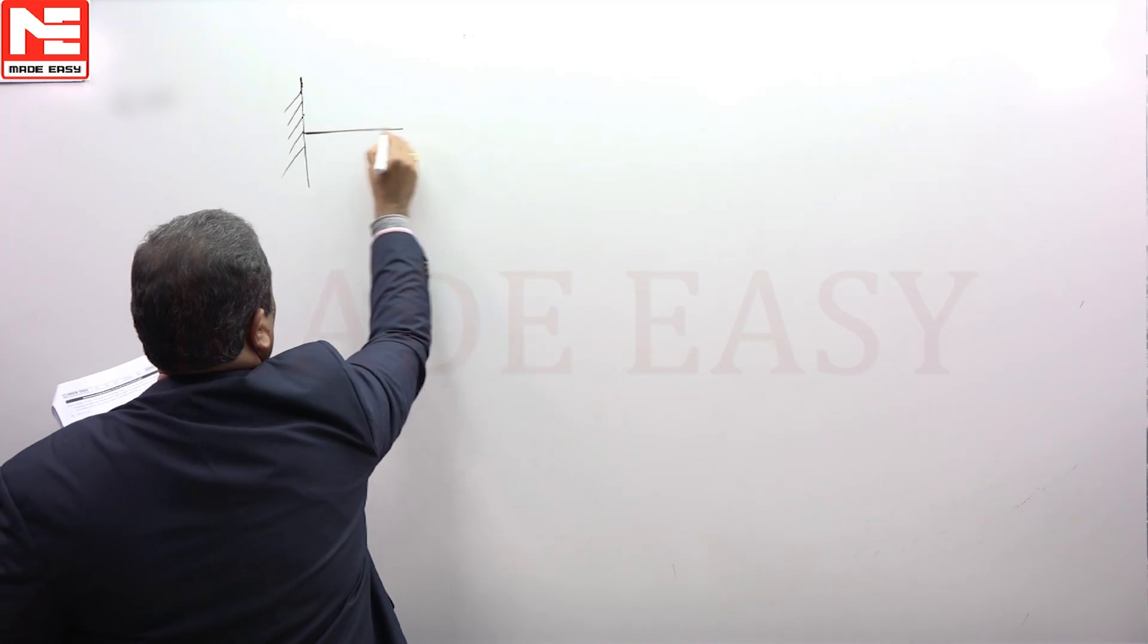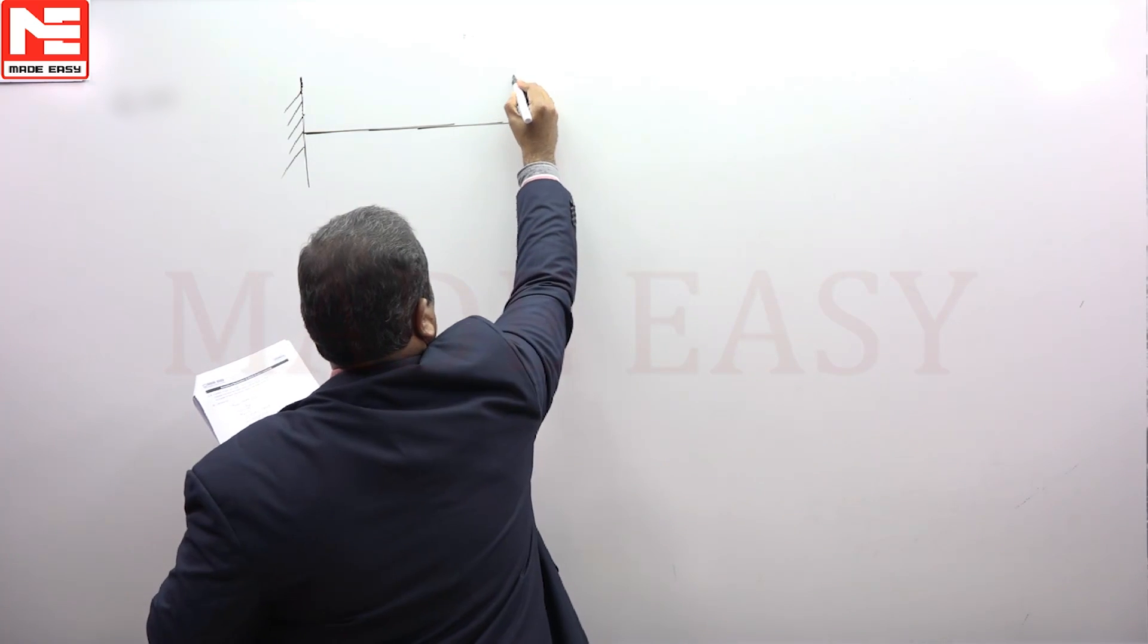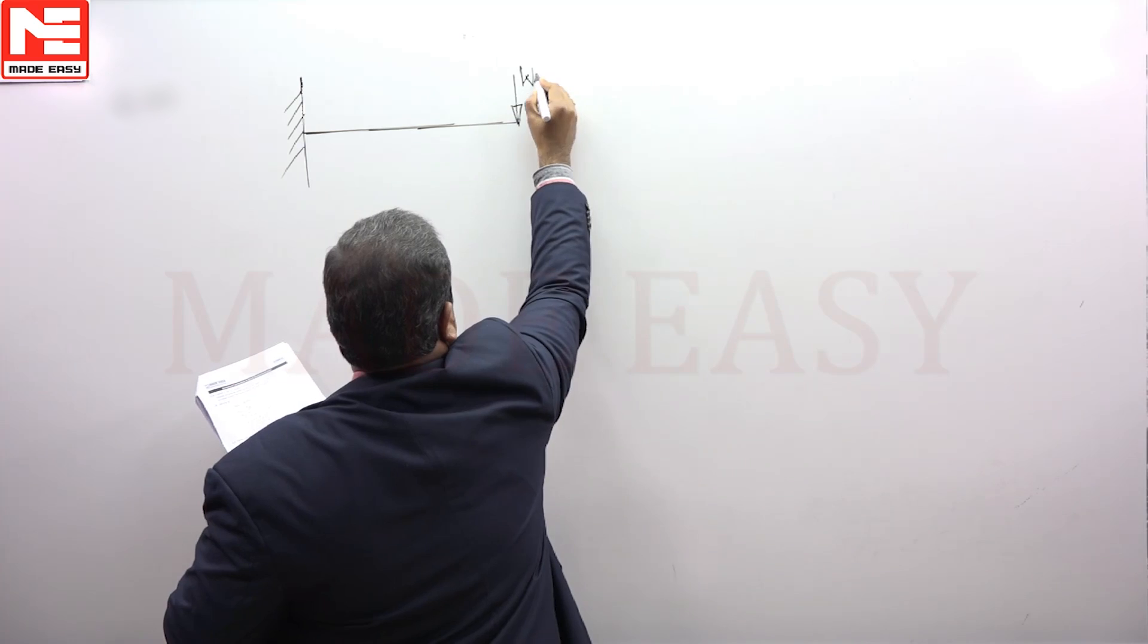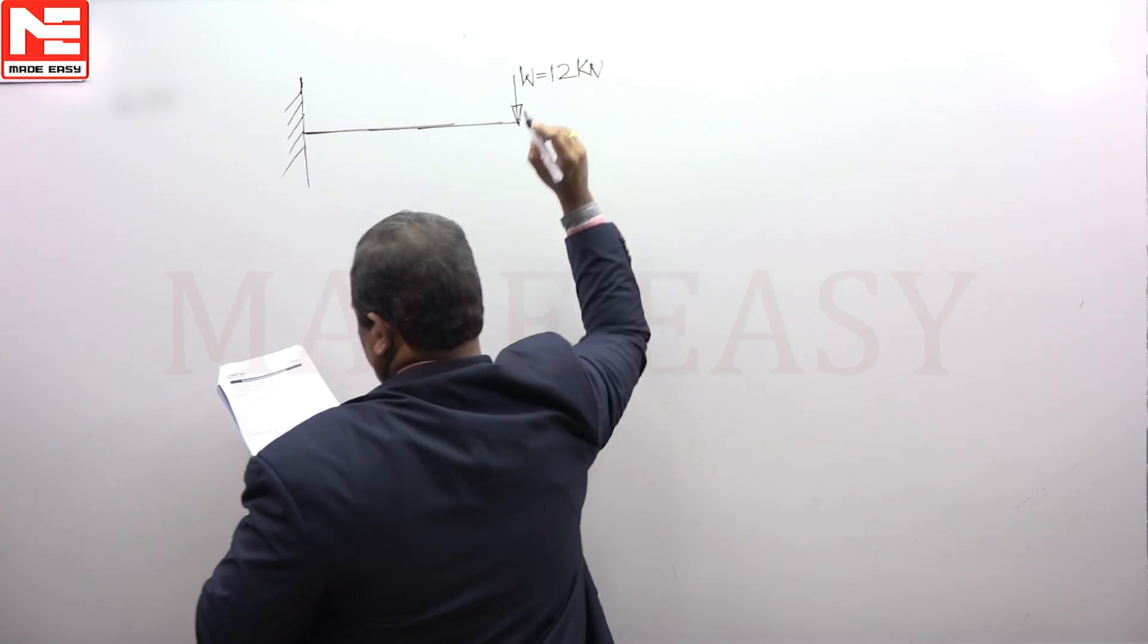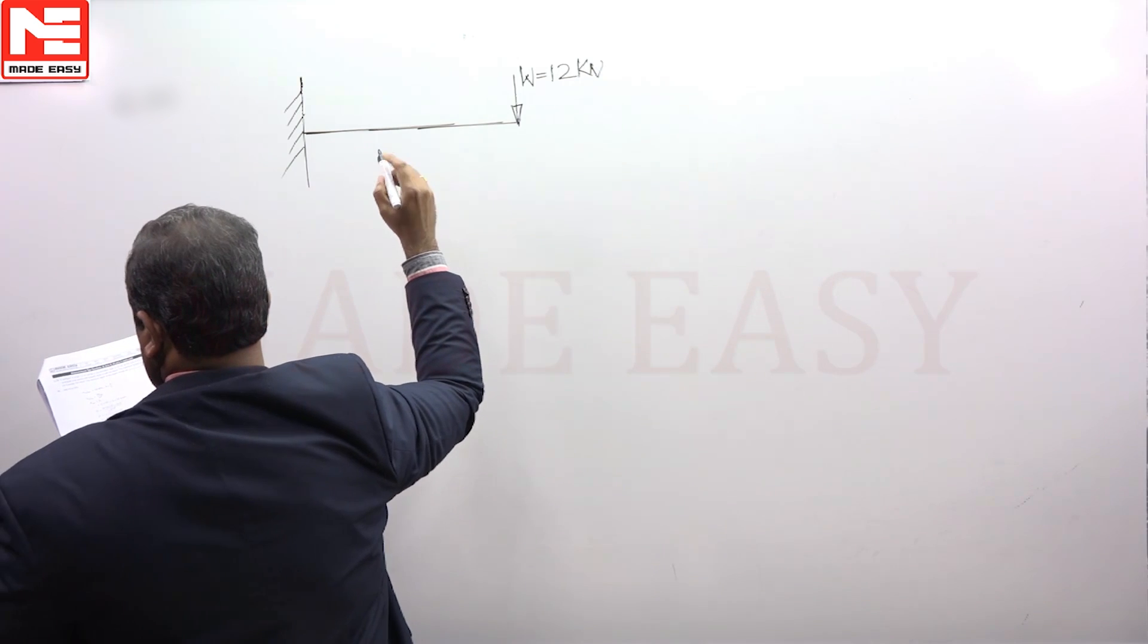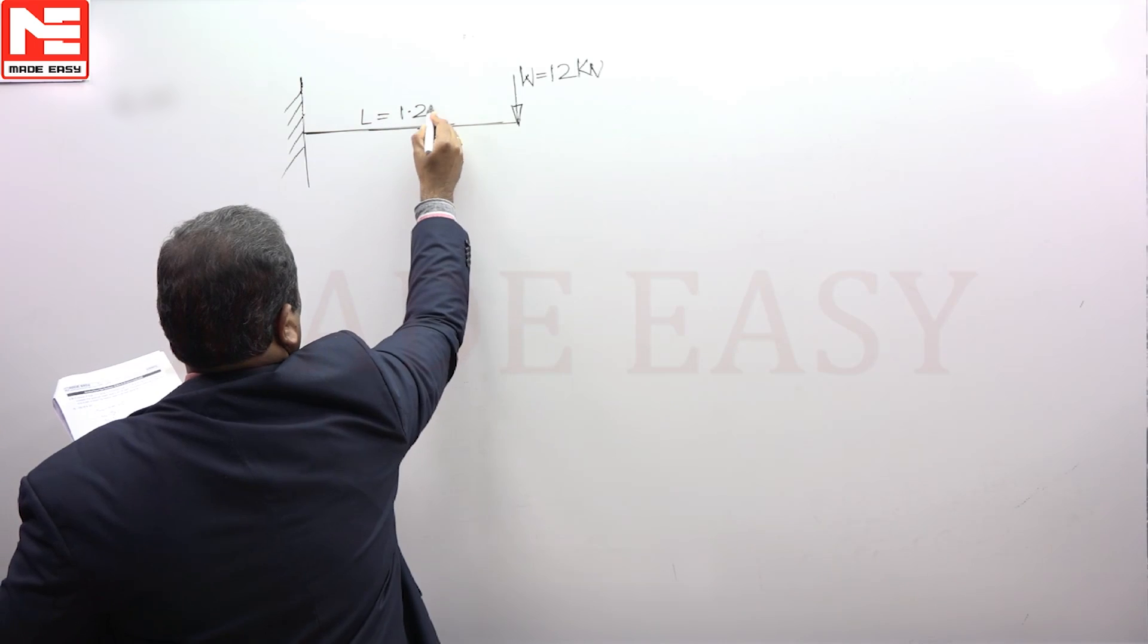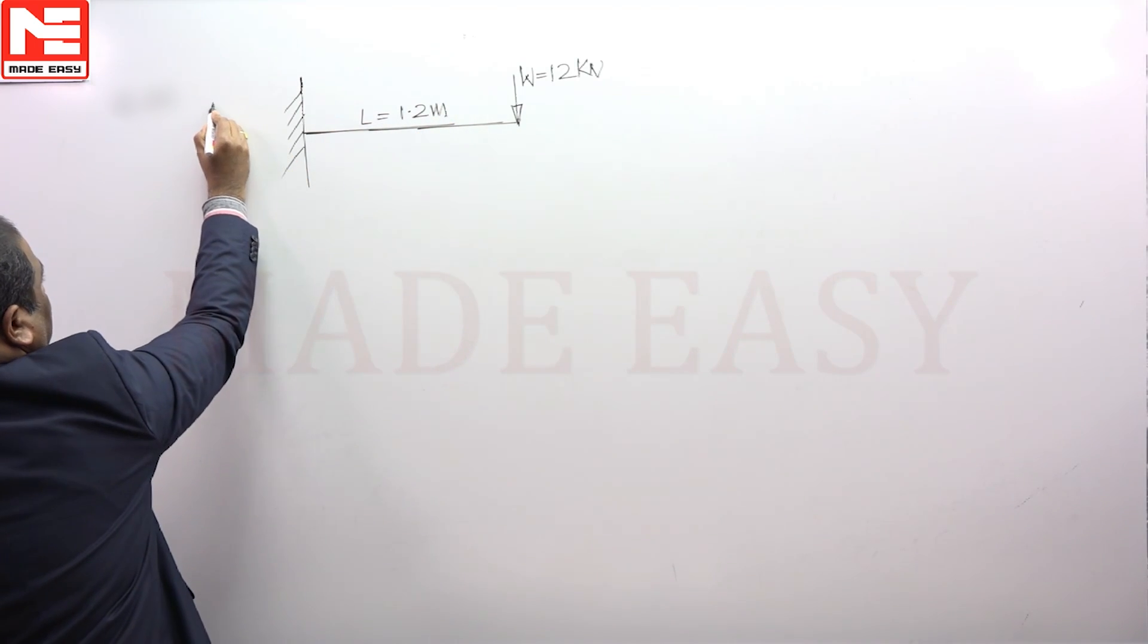It is a cantilever beam subjected to a concentrated point load of 12 kilonewtons, with a length of 1.2 meters, and the cross-section is given as a rectangular cross-section.